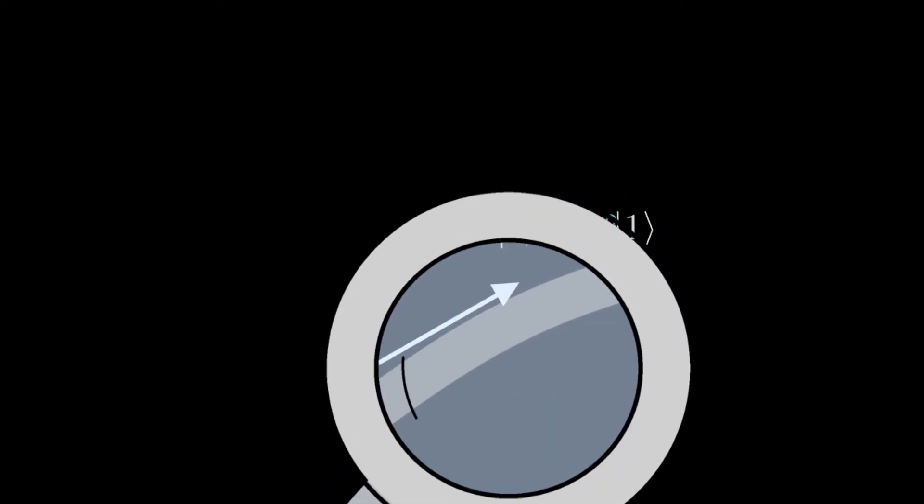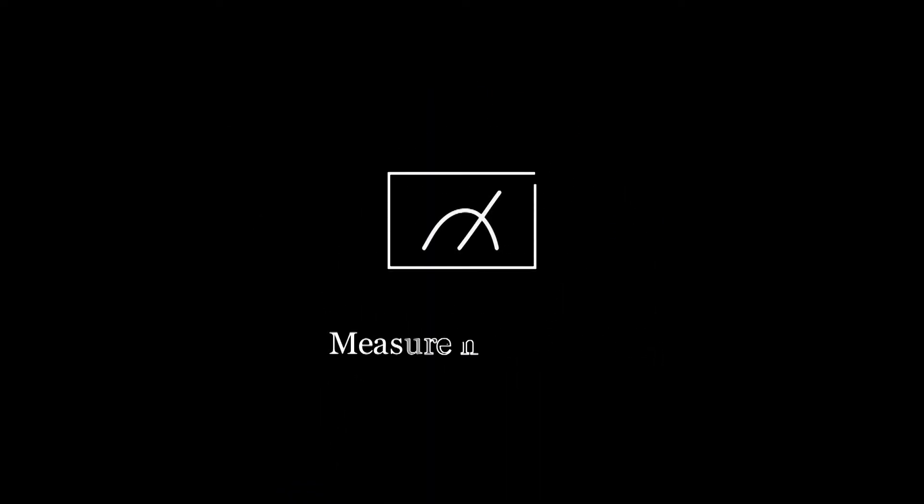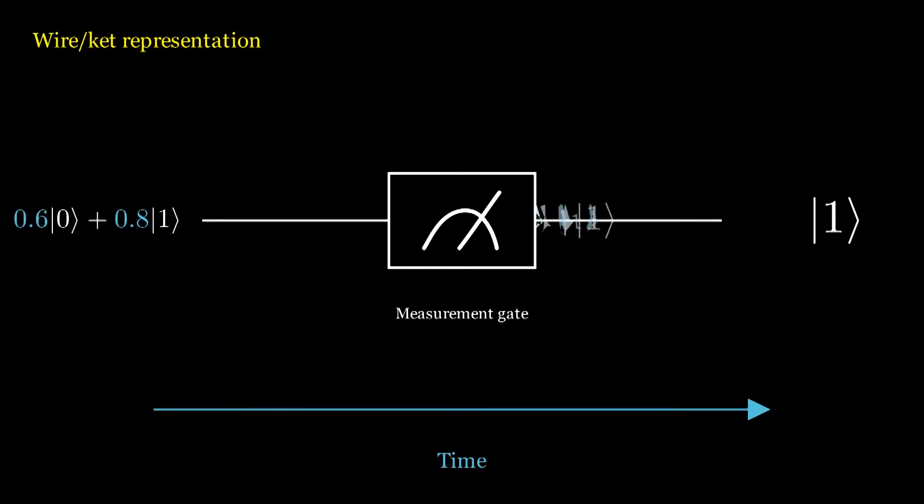Because looking changes the state, some people call measuring a gate. This is a wire. Wires show the change of a quantum bit over time. We can put any gate on the wire.